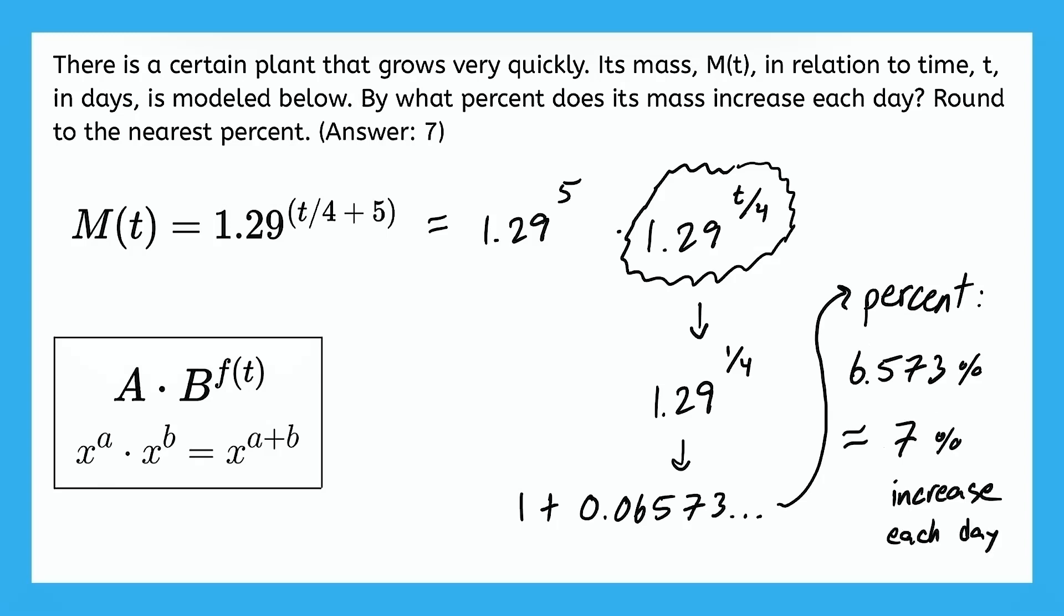So as this plant grows, its mass increases by 7% each day, just like we saw as the answer that we should get. If you still feel a little bit shaky on that conversion to the percent, you can always go back and look at the video titled Interpret Change in Exponential Models and that will help remind you how to do that conversion.